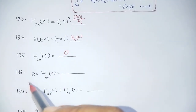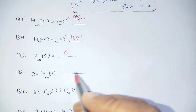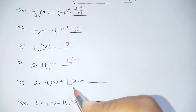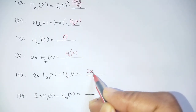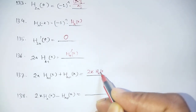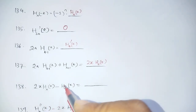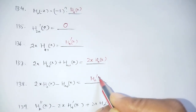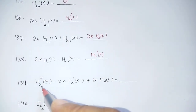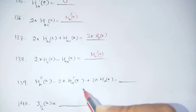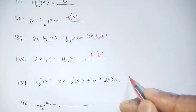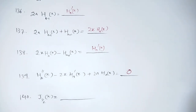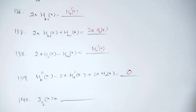Recurrence relations for Hermite Polynomials: Hn'(x) = 2n·Hn-1(x), and Hn+1(x) = 2x·Hn(x) - 2n·Hn-1(x). Also, Hn'' - 2x·Hn' + 2n·Hn(x) = 0, which is the Hermite differential equation.